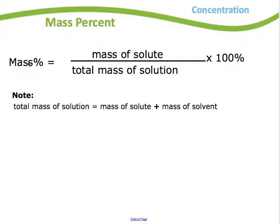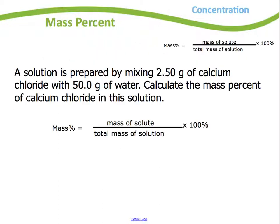So mass percent basically tells you what percentage of the solution is whatever you have. So if it's a salt solution or a chlorine solution or an acid solution, if they talk about mass percent, it's giving you a percentage of the solute in total solution. Let's try a question.